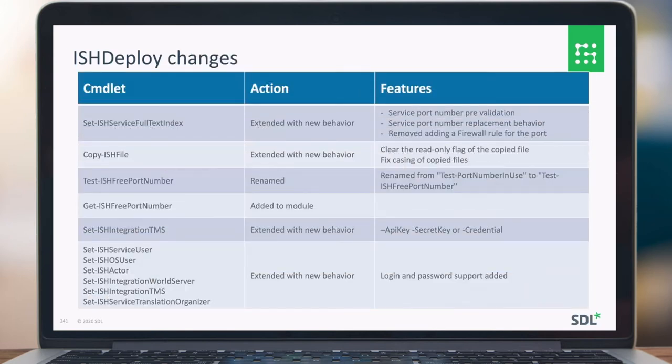What have we changed in IstDeploy in the upcoming version? For the Set-IshServiceFullTextIndex, we added new features: service port number pre-validation and also port number replacement behavior. We also removed any firewall rules for the port, so it's easier to set up your full text index service. For Copy-IshFile, we now clear the read-only flag of the copied file and fixed issues on the casing of copied files.